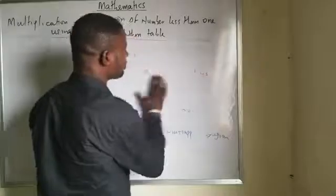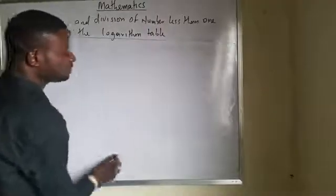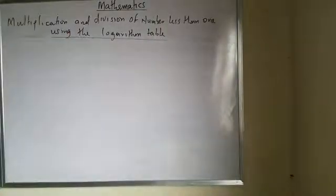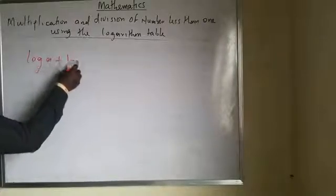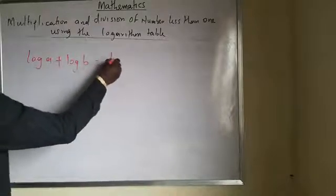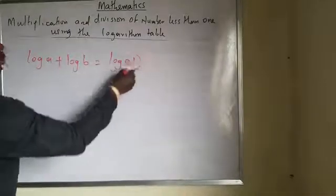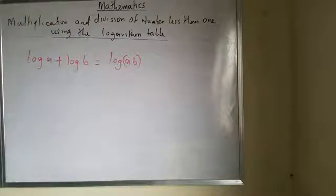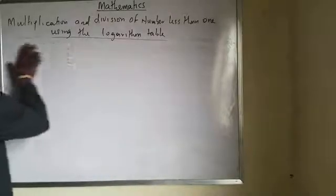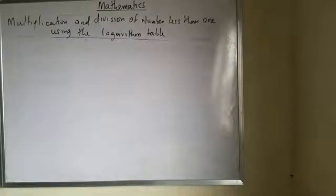I've explained the multiplication law of logarithm in previous videos: log A plus log B equals log AB, which is A multiplied by B. When you have numbers to multiply, their logarithms are added together. I'll now show you one or two examples to help you understand.